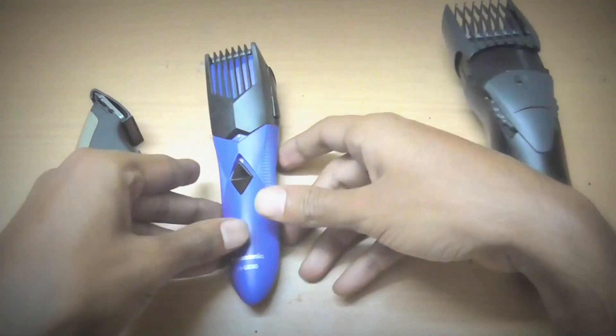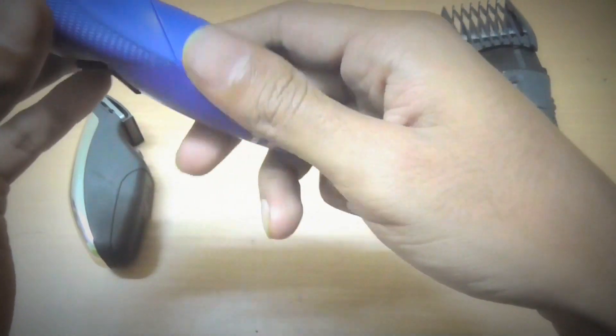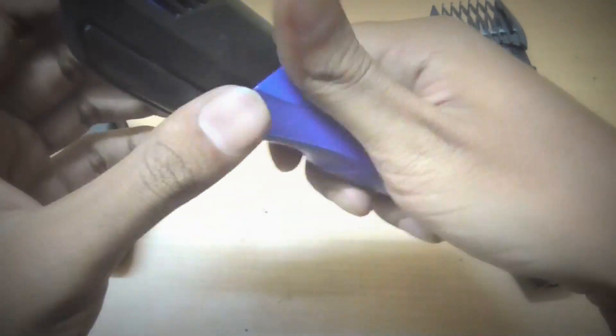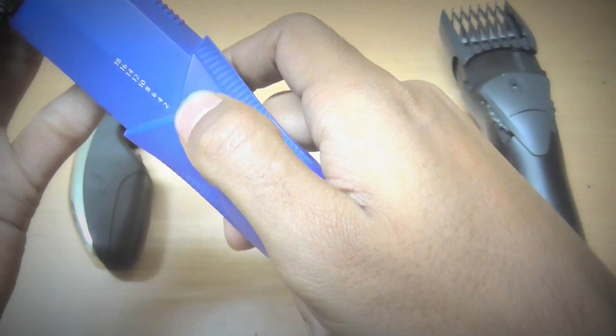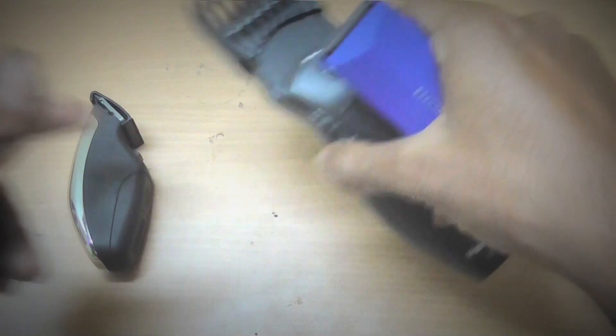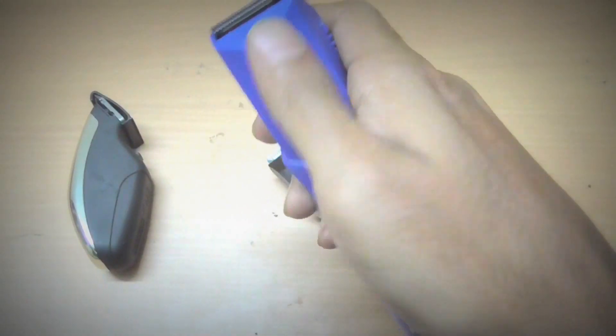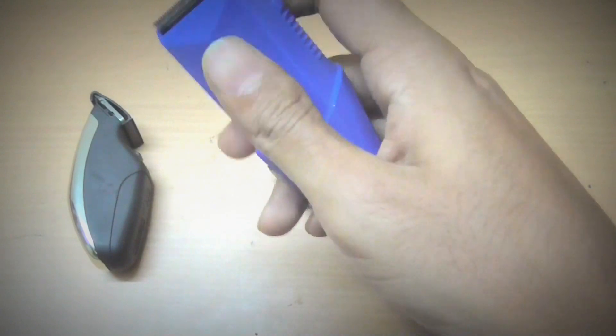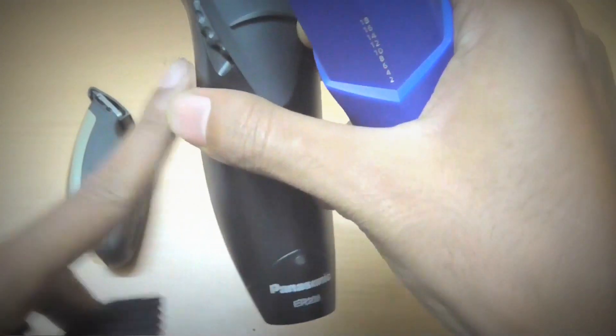Whereas this Philips ERGB30 is very light and especially made for travelling purposes. It also comes with adjustment and is also available from 2 to 18mm. As you can see, the blades are smaller as compared to the blades of the previous one. So this makes it suitable for short hair. But if you are going to use it for long hair, then I will say that you prefer this Panasonic ER206.